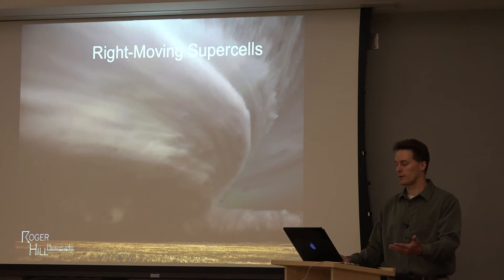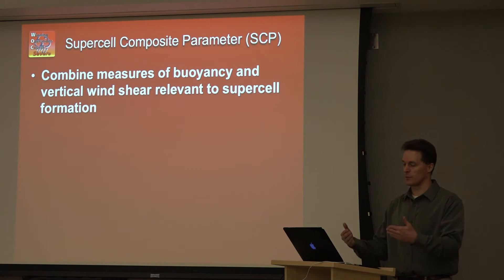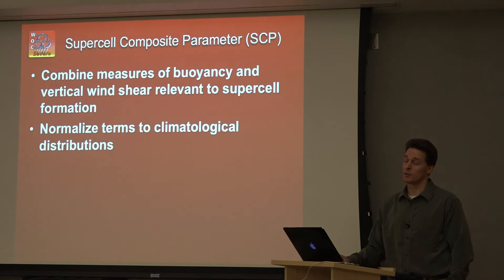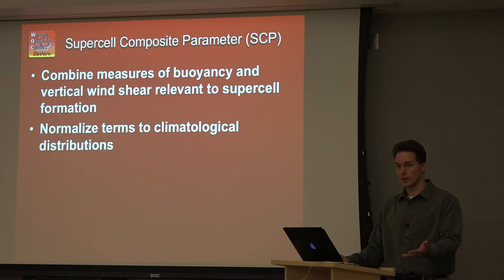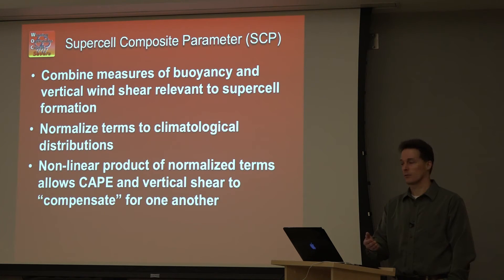Let's look at right-moving supercells and how we quantify this with the supercell composite parameter. We take all these ingredients — measures of vertical shear and buoyancy — and combine them in a way that highlights where these ingredients are co-located in time and space and to what extent. We normalize those to climatological distributions from proximity soundings — what's a typical effective bulk wind difference, what's a typical effective storm-relative helicity — and bigger is better. You get larger values when the values are above climatology. When you take a product of these terms, one can compensate for another: marginal vertical shear with very large buoyancy, or conversely marginal buoyancy with very large vertical shear, can still yield positive outcomes.